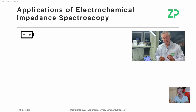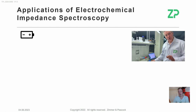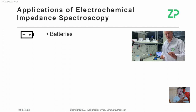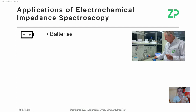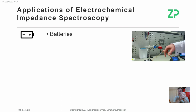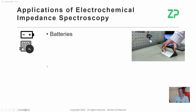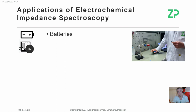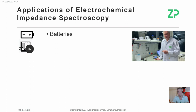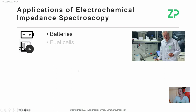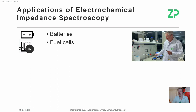Impedance spectroscopy has a lot of applications — in cells, batteries, and modules. The fundamental unit in a battery is an electrochemical cell: an anode, a cathode, and an electrolyte between them. Those cells build up to batteries, and batteries get packed into modules. Electrochemical impedance spectroscopy plays a very useful role in understanding batteries.